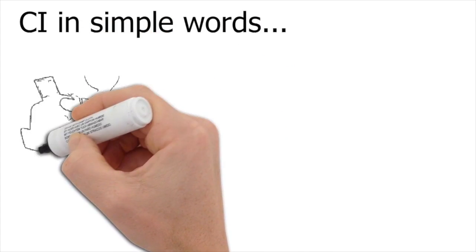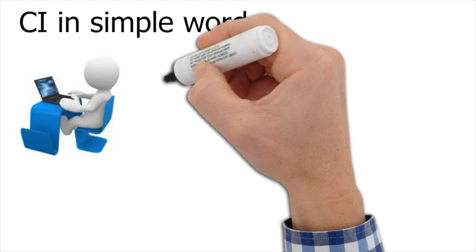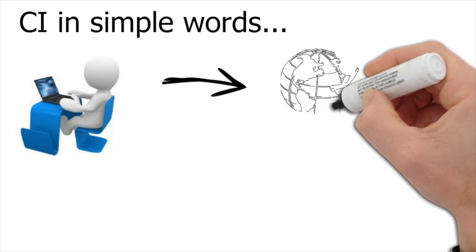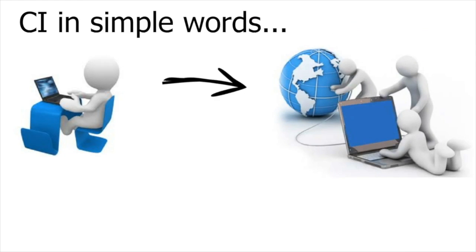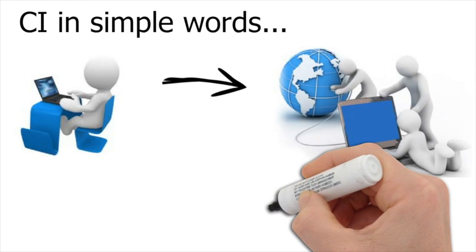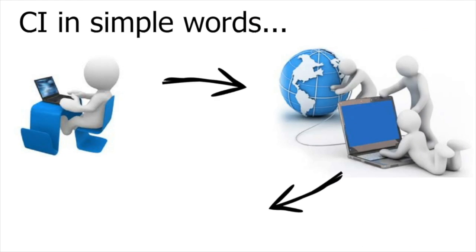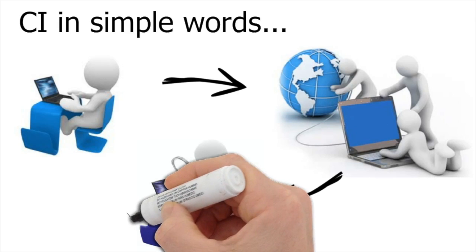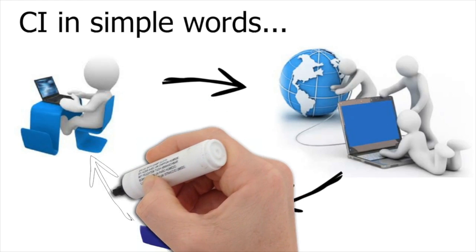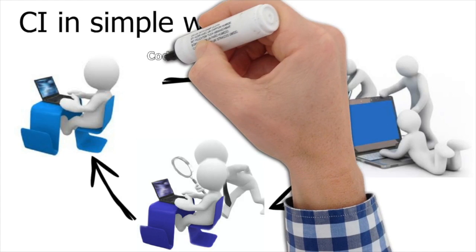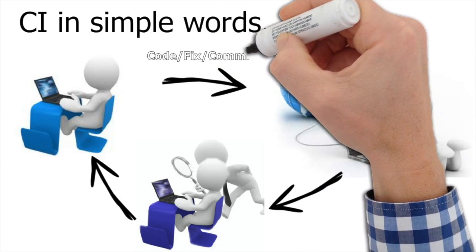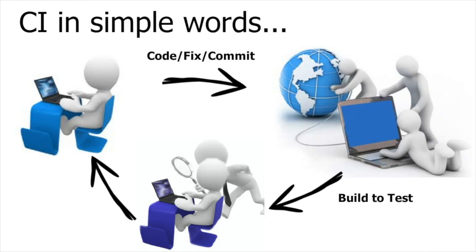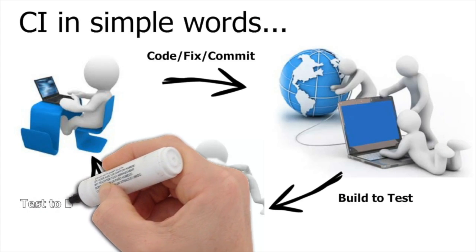Let's see CI in a very simple manner — how CI looks for a normal person. Here we have a developer who is developing, fixing bugs, and writing code, then committing and providing it to the build system, which is taken care of by the DevOps guy. DevOps guys provide a build that is ready to test to the testers or the quality analysis team.